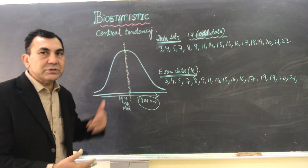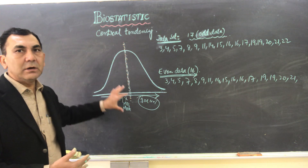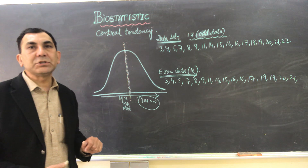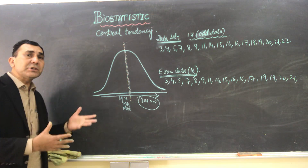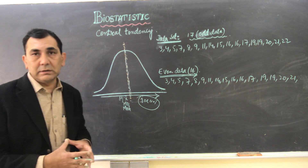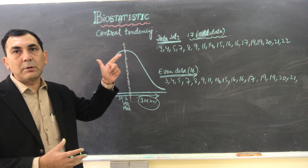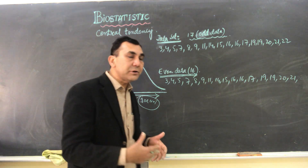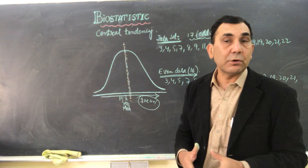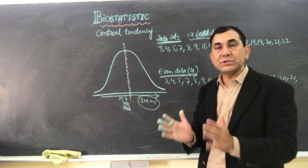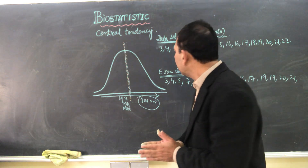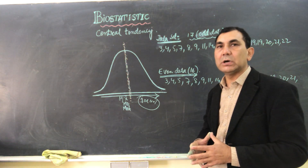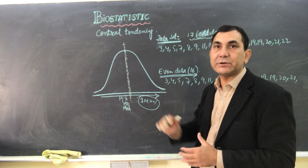In central tendency we measure the mean, mode, and median of normally distributed data. Yesterday we learned about the mean — the first method — in which we calculate the central tendency by measuring the average of the data set. Today we will learn about the second method for measuring central tendency.